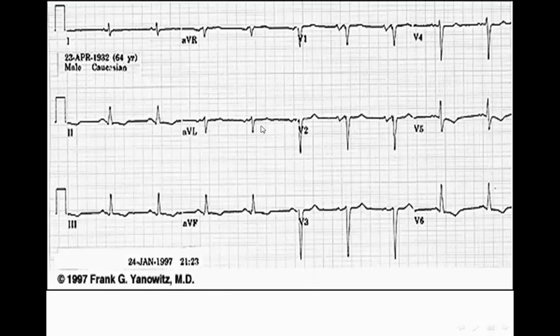This is an example: the P wave here is prolonged first, and then it is biphasic — positive then negative. This is an example of left atrial enlargement.